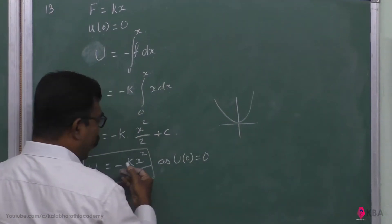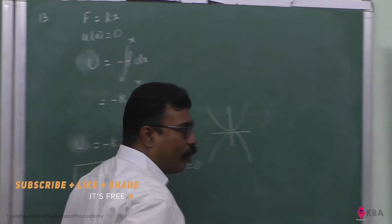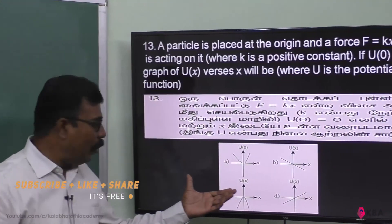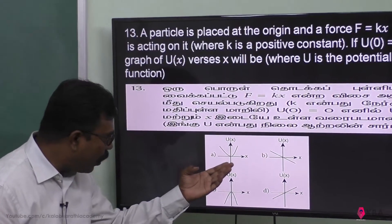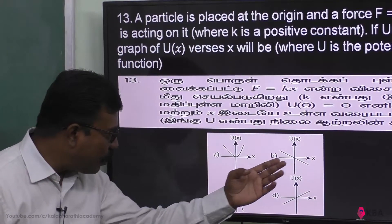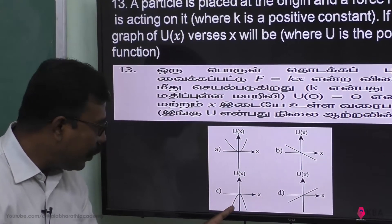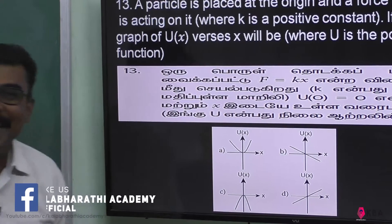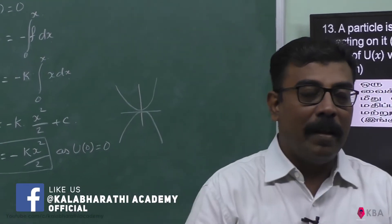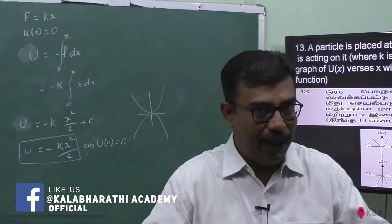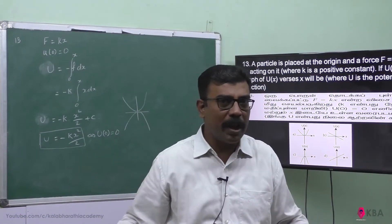This is negative, so this is inverted — an inverted parabola. So this is the correct curve, and C is the correct answer.